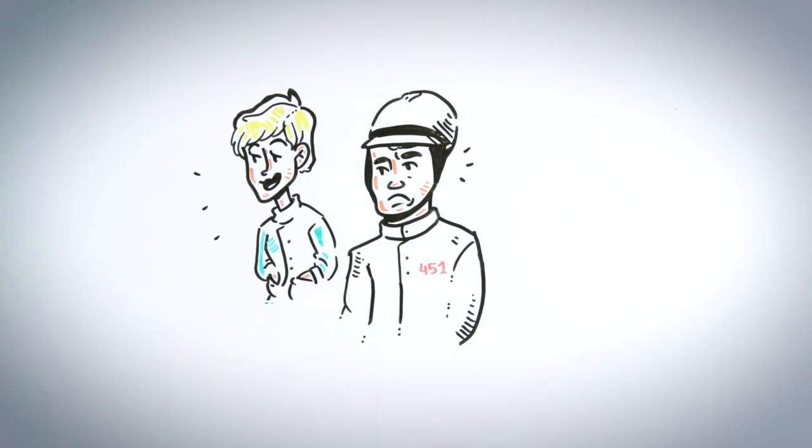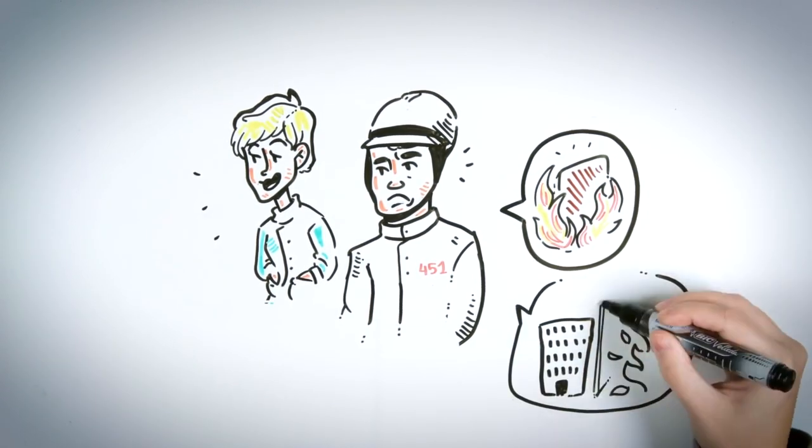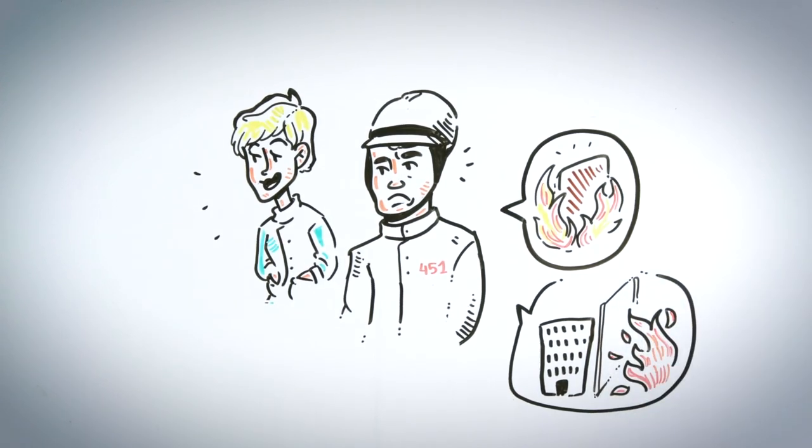Montag doesn't believe Clarisse. He replies that firemen have always had the task of destroying books, that it is impossible for houses to catch fire suddenly because they have always been built with fire-resistant materials.